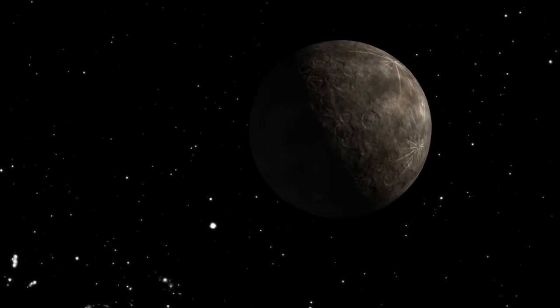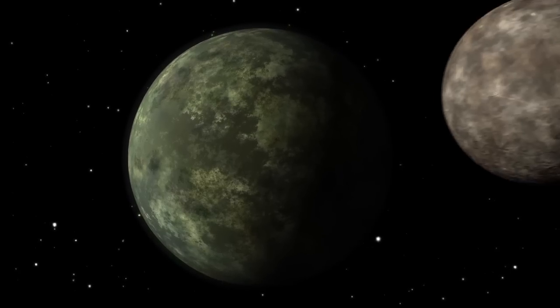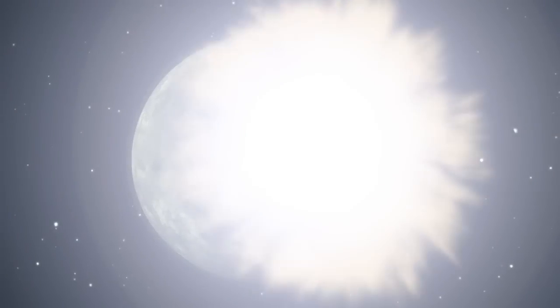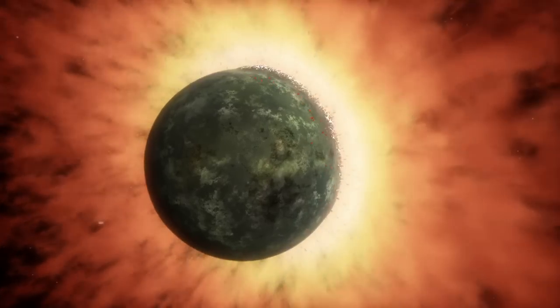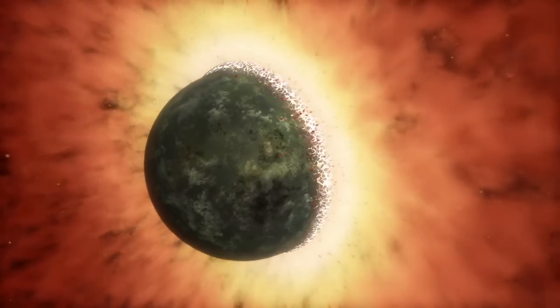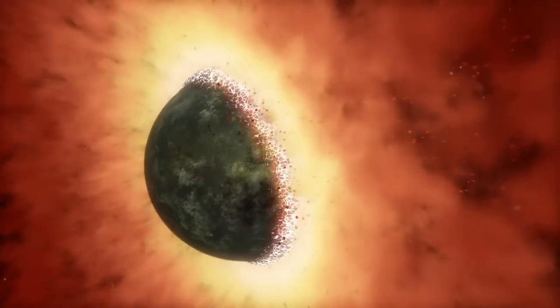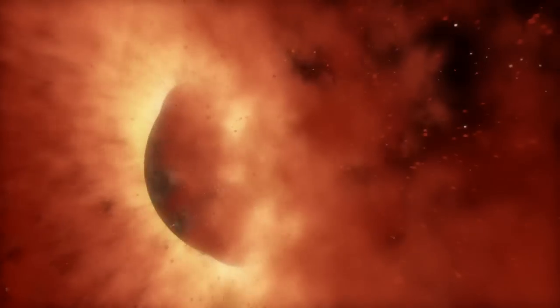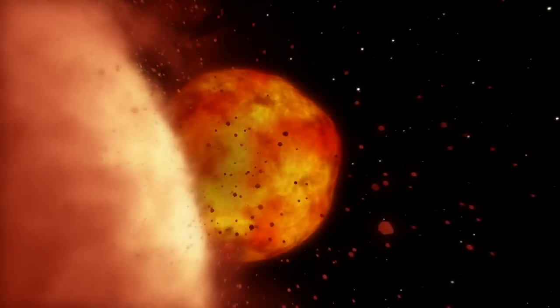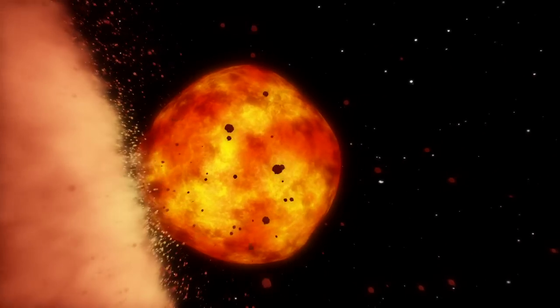Imagine what would happen if our Moon slammed at high velocity into a Mercury-sized planet. The resulting impact would eject a tremendous amount of molten material into space. As it cooled, it would likely form tektite, obsidian, and silicon monoxide gas, explaining the features seen in the HD 172555 spectrum.